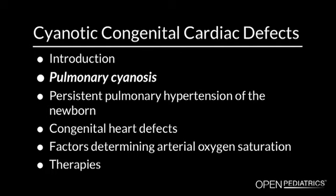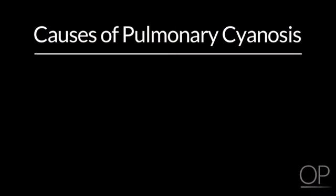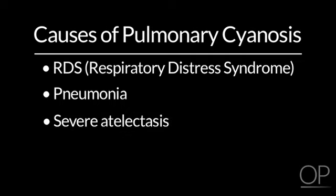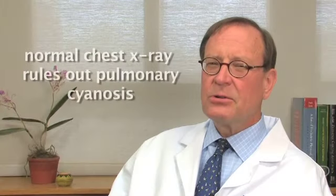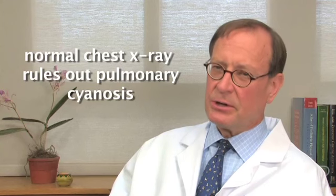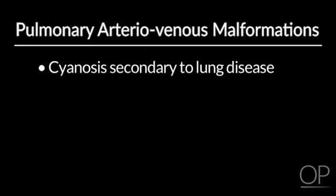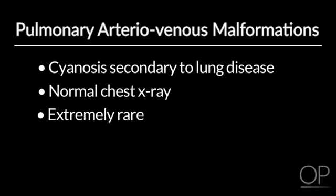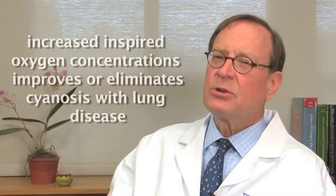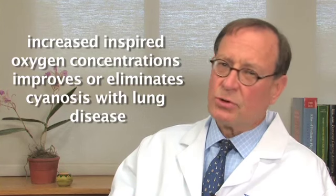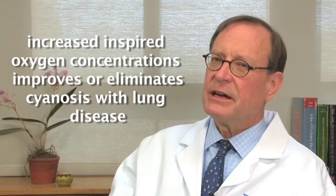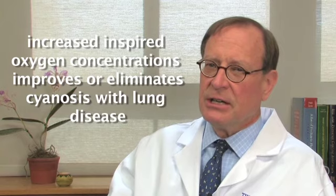Pulmonary cyanosis in babies, and to some extent older patients as well, is primarily caused by RDS, pneumonia, and severe atelectasis, although mild atelectasis rarely causes true cyanosis. A normal chest x-ray pretty much rules out pulmonary cyanosis — with one exception: patients with pulmonary arteriovenous malformations can have cyanosis on the basis of lung disease not apparent on chest x-ray, but that's a very rare entity and almost never shows up in the newborn. Increased inspired oxygen concentration generally much improves or eliminates cyanosis with lung disease.